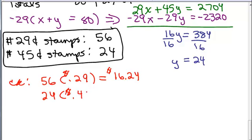And then we've got 24 of the 45-cent stamps. You could do this in cents instead of dollars. I'm doing it in dollars. So we have 24 times 0.45, and that's $10.80.